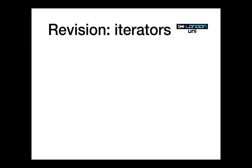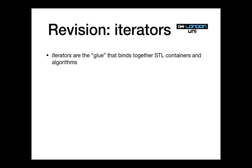Iterators are the glue that bind together the algorithms in the standard library and the containers. Containers are data structures that hold your information — a vector is a contiguous array of values, a standard list is a linked list, an unordered map is what most languages call a hash map, a standard map is an ordered map. There are lots of containers and algorithms in the STL, and the interface between containers and algorithms is what we call iterators. Containers provide iterators and algorithms consume them.